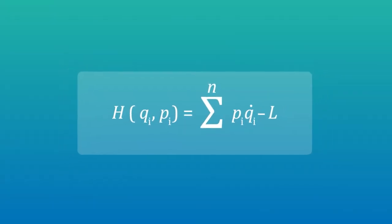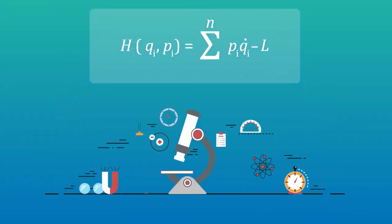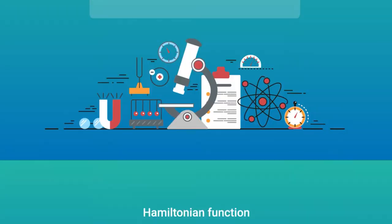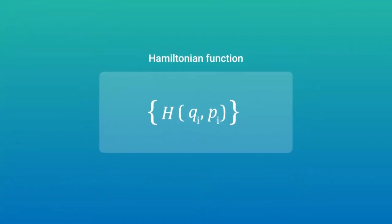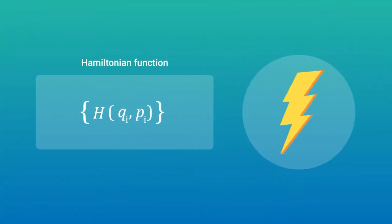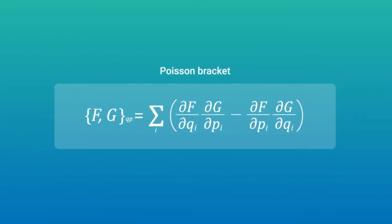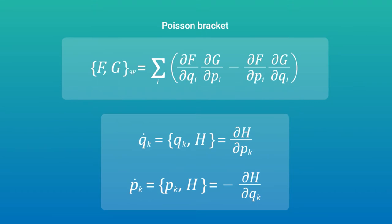The Hamiltonian formulation of classical mechanics is an elegant formalism. It is characterized by the Hamiltonian function, which represents the total energy of the system and a Poisson bracket acting on it to give the Hamiltonians equation of motion.